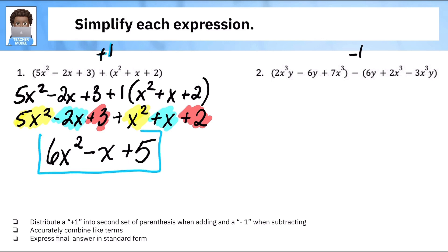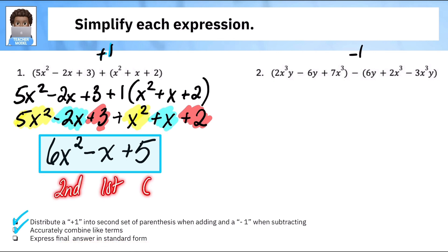It's in order in terms of degrees, so we're done with this one. Here's our final answer — hit pause and jot this down. What are you looking for? That I distributed the positive one, that I accurately combined like terms, and that I expressed my final answer in standard form — second, first, and zero degree terms. All correct.